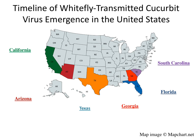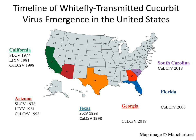In the United States, there are three major cucurbit growing regions: the Southeast, South Texas, and the Southwest. In each region, whitefly transmitted viruses have emerged and spread. The first whitefly transmitted virus to affect cucurbit production was squash leaf curl virus (SLCV) in the late 1970s, emerging in California and Arizona and eventually found in Texas in the early 1990s. Lettuce infectious yellows virus (LIYV) was the first yellowing virus disease and wiped out much of the fall cucurbit production in the Southwest during the 1980s. Cucurbit leaf crumple virus (CuLCrV) was identified in the Southwest and South Texas in 1998 and has moved aggressively through the South, with great potential to become a concern throughout the Gulf Coast region.